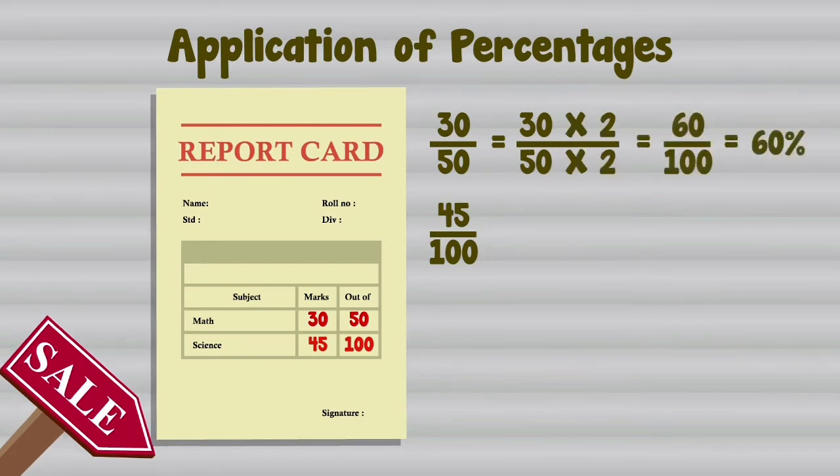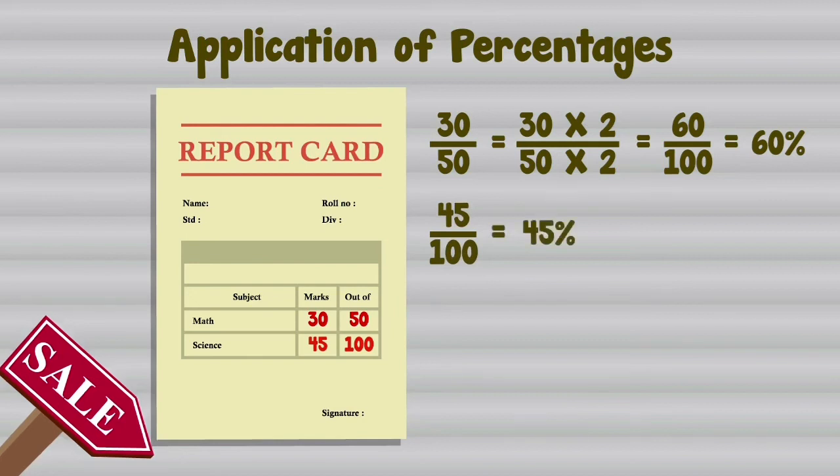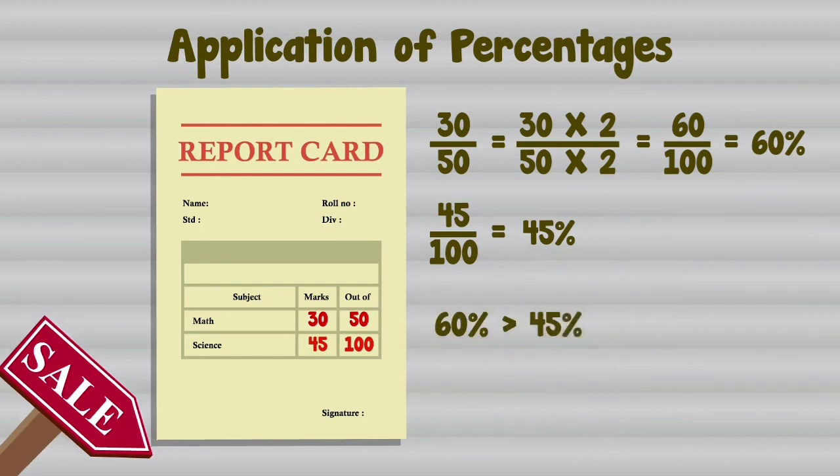The score in science is 45/100, which equals 45 percent. Since 60 percent is greater than 45 percent, we can say you performed better in math.